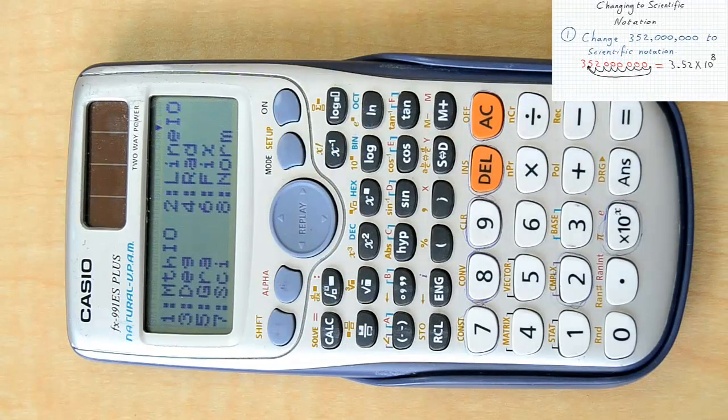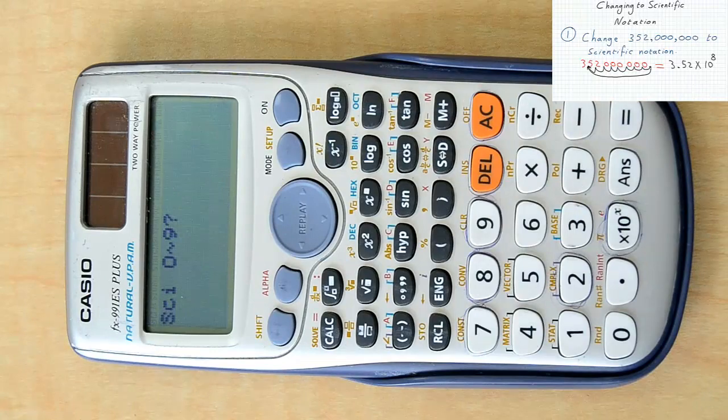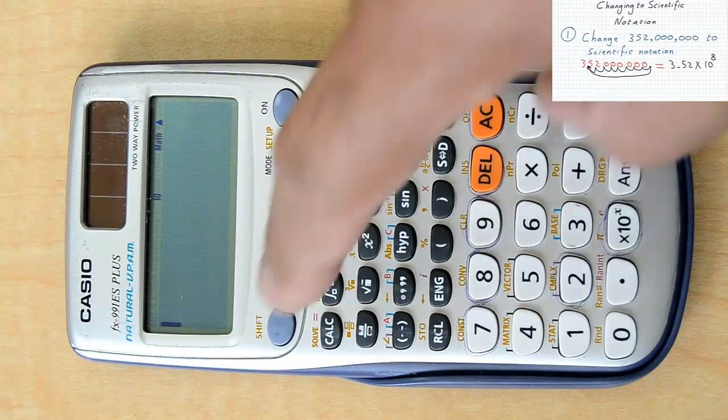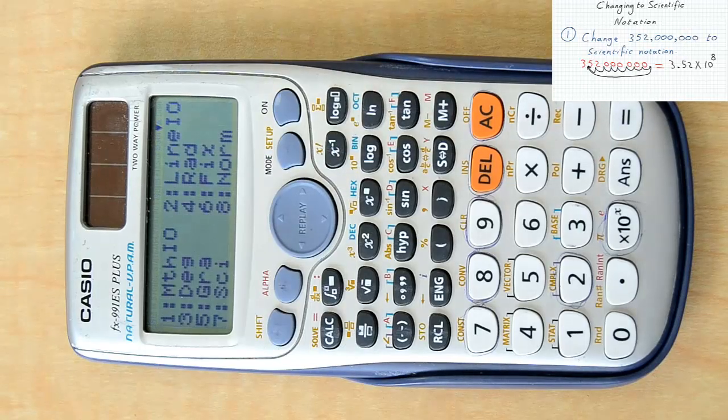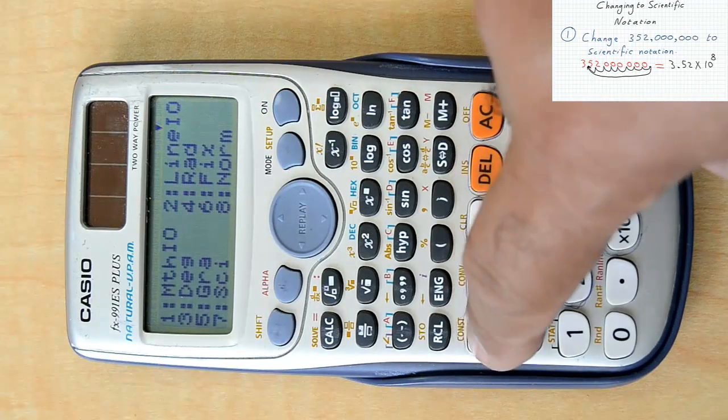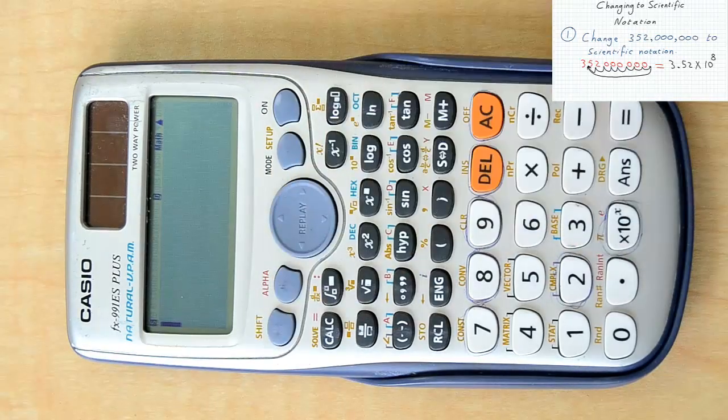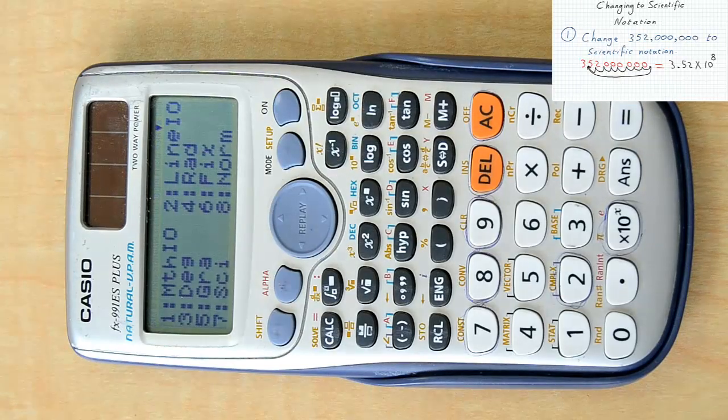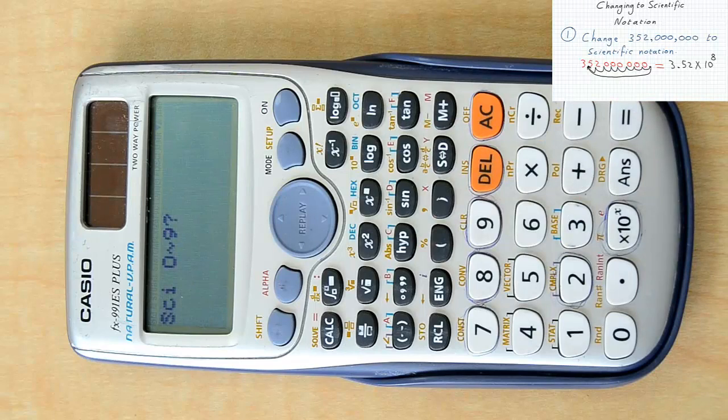you need to press shift, then mode button, then you will choose 7, which is the number connected with scientific notation in your calculator. Then the calculator will ask you to choose a number between 0 to 9. Choose